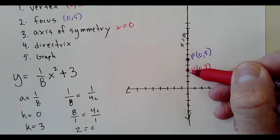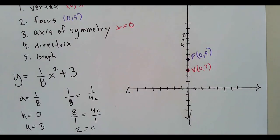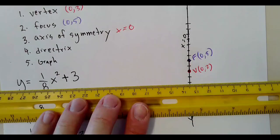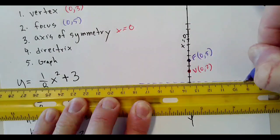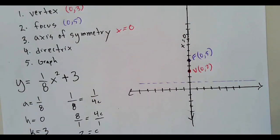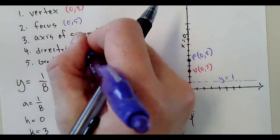It goes basically the same distance. Our directrix is right about here. If I wanted to get a straight line, I like to do a dotted line, a dashed line for the directrix, and that's going to be y equals one. That's our directrix.